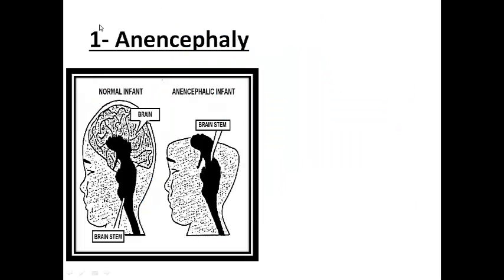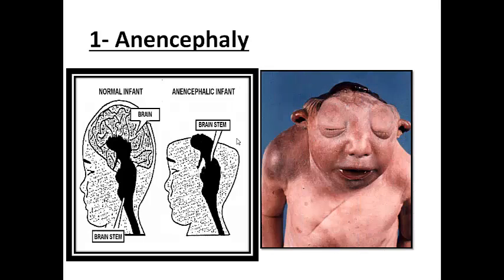We'll start with anencephaly. The basic problem in anencephaly is a failure of closure that occurs at the cranial aspect of the neural tube. Because it occurs at the cranial aspect, this leads to the absence of the skull and the absence of a brain, leading to something usually described as the frog-like appearance of the baby.